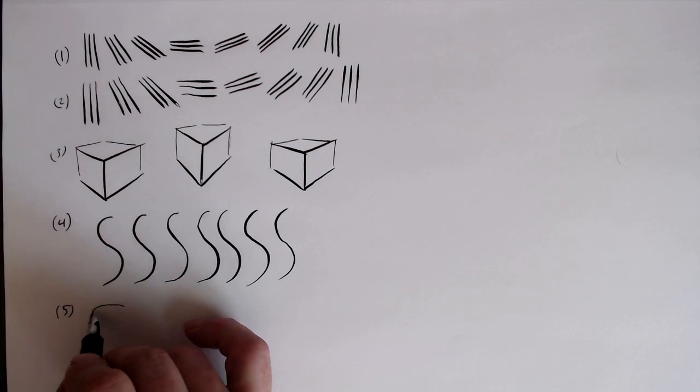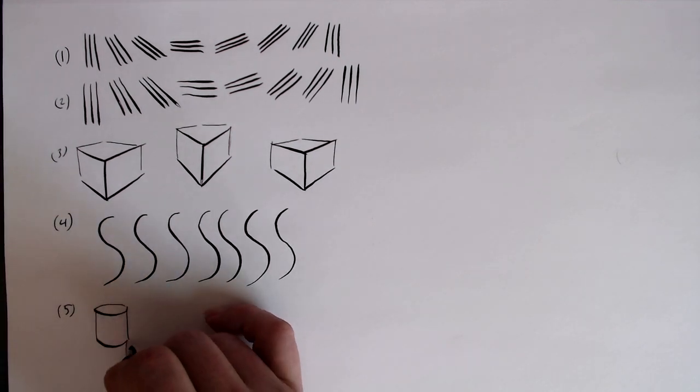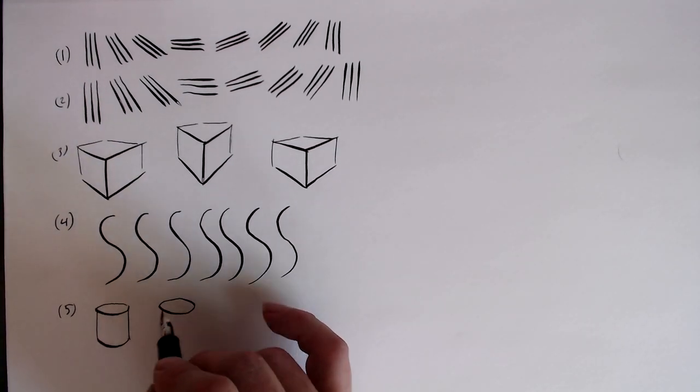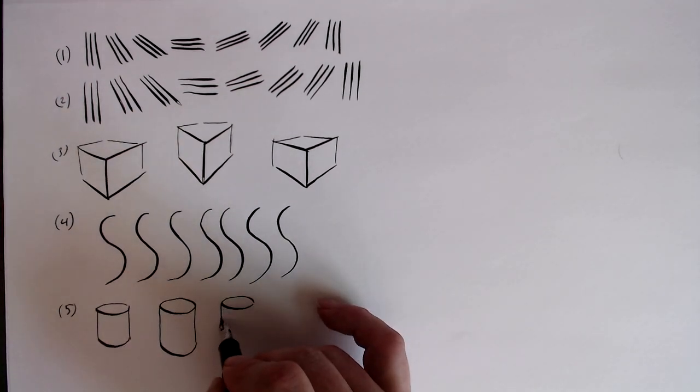Drawing cylinders is also great practice, because the very front edge of the ellipse needs to be thicker, since they're closer to the viewer, and the sides of the ellipses need to be thinner, since they're further away.